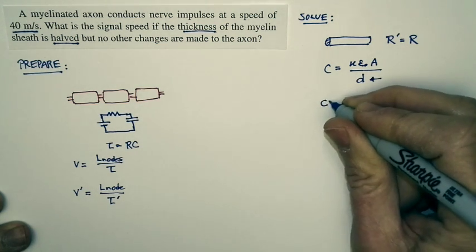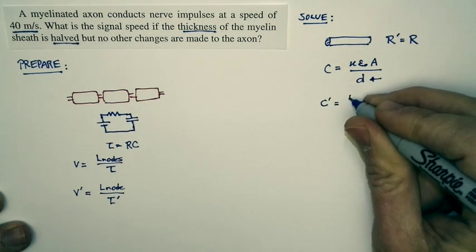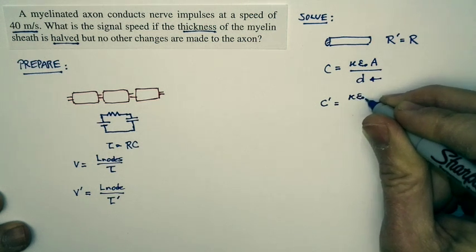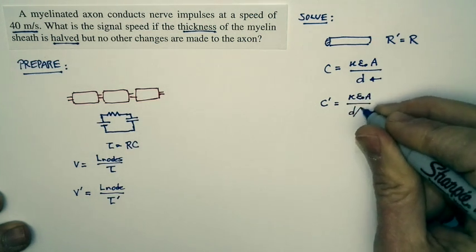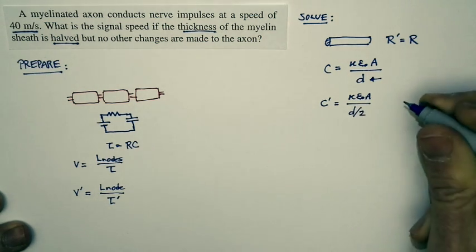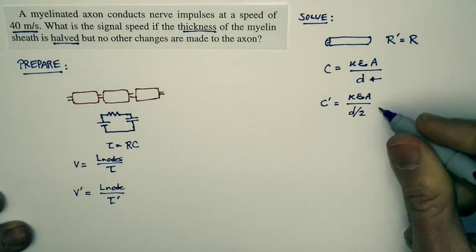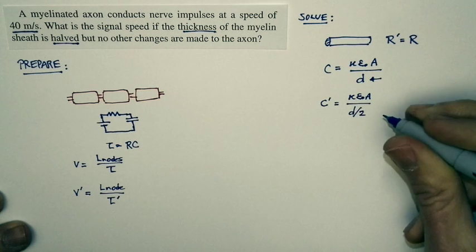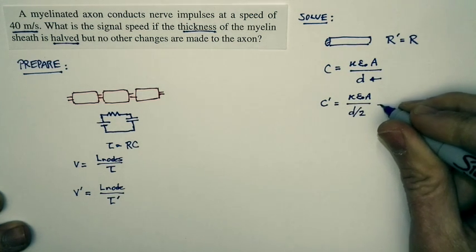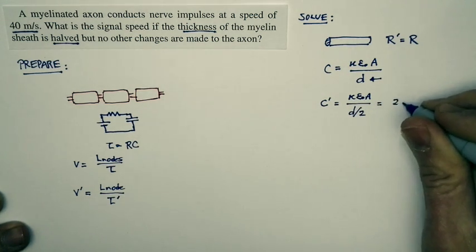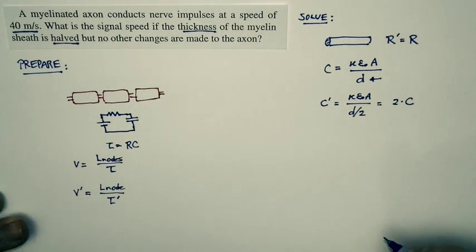And so our new capacitance is just equal to the same expression we had before, except I have one half the thickness. And so I have one half the distance between the inside and the outside of the capacitor. And so the new capacitance is just equal to twice the original capacitance.